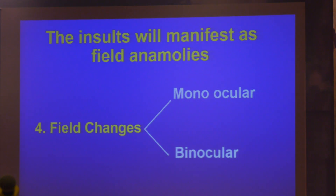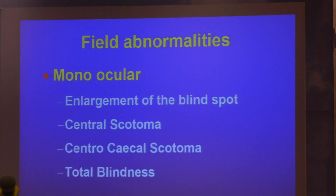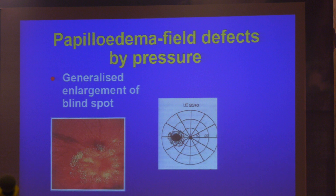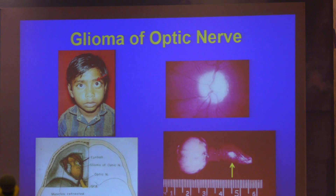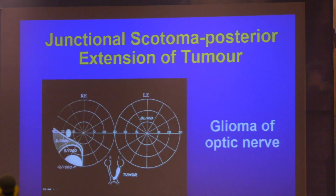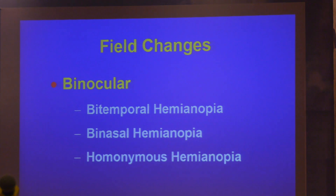Coming to the visual field: it can be monocular or binocular. A monocular field defect can be an enlargement of the blind spot, a central scotoma, or total blindness. Monocular optic nerve problems are very common — you can see blurred disc margins and a field chart showing enlargement of the blind spot. A monocular field defect can occur in glioma of the optic nerve; if it crosses the junction of the chiasma and optic nerve, it becomes bilateral. There are only three field effects in all of ophthalmology: bitemporal, binasal, and homonymous. Bitemporal can only occur at the chiasma — no other area can produce it.